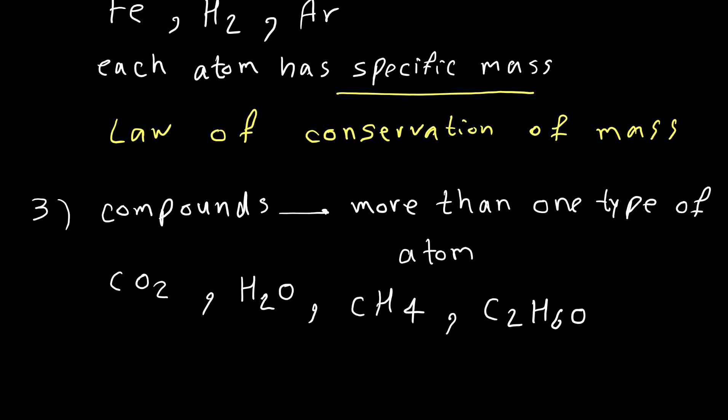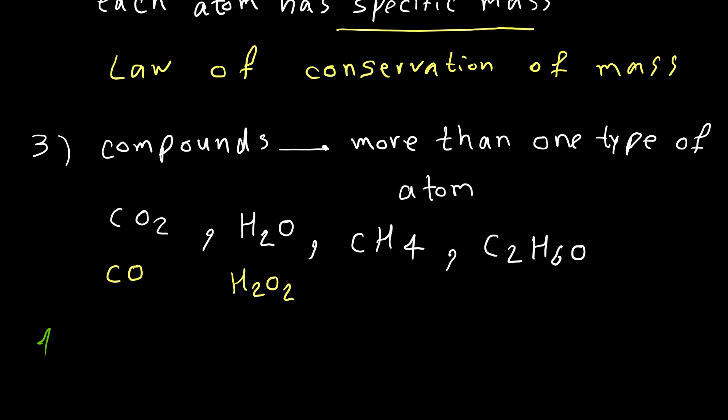Methane again has two different types of atoms: carbon and hydrogen. Or ethanol, which has three types of atoms. Dalton explained that the ratio of atoms in a compound is fixed — they have fixed proportions. But today we know this is not completely true, because for a combination of carbon and oxygen we have another compound like carbon monoxide, and for hydrogen and oxygen there is hydrogen peroxide. So this is also not completely true today, but at the time it was a very good explanation.